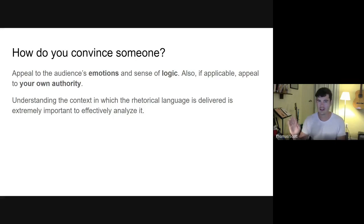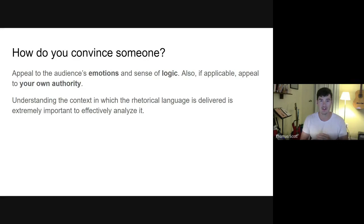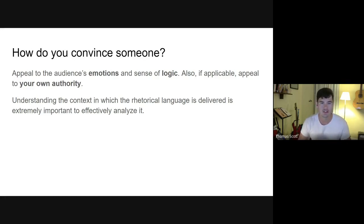As we said in our previous episode, how do you convince someone? You use a mix of emotion, a mix of logic, and if applicable, you appeal to your own authority — that's what rhetoric is about: achieving your purpose, which often involves changing a person's mind. We're going to use plain-spoken words rather than fancy Greek terms. Understanding context is extremely important.